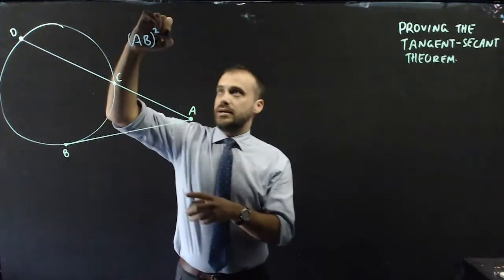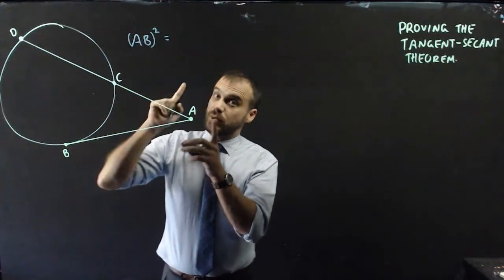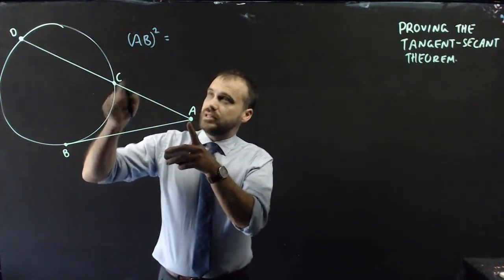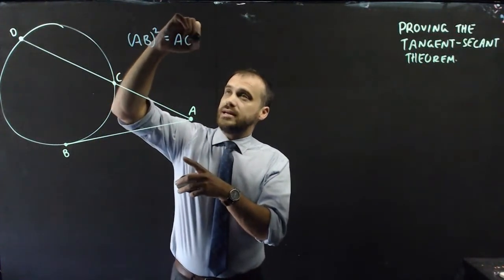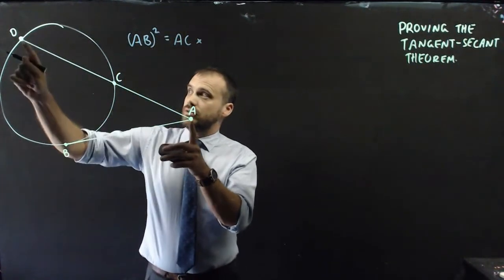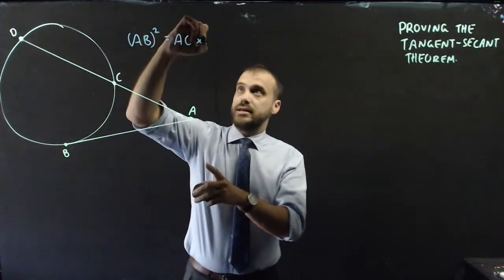So that length there, it's going to be equal to—and this is where students mess up—this length here, length AC, times this length here AD.